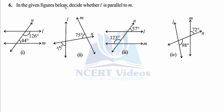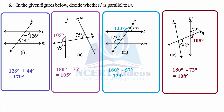Question six: decide whether l is parallel to m given the angles in each figure. This is the reverse process — earlier we were given parallel lines and found angles; now we are given angles and must determine if lines are parallel using the same properties. In the first figure, we have interior angles 126° and 44°. For l to be parallel to m, they must add to 180°. Checking: 126 plus 44 equals 170°, not 180°.